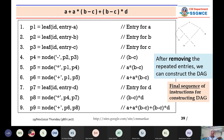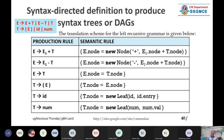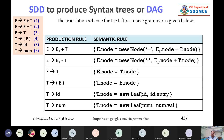I will stop here and we shall discuss this in the next session. This is a syntax directed definition for the DAG. We have seen how intermediate code is generated; in the same way, from a given expression, the DAG or syntax tree is generated directly. You can take a screenshot or download it — we shall see this in the next lecture.